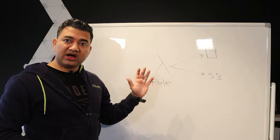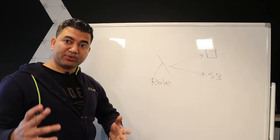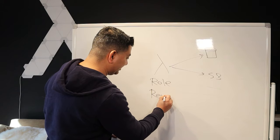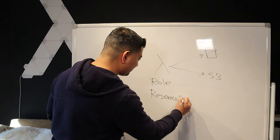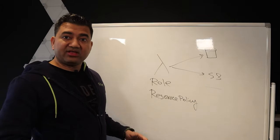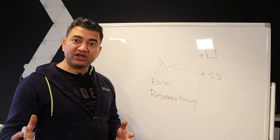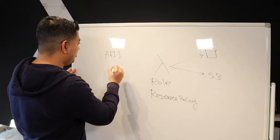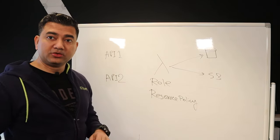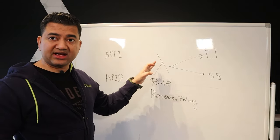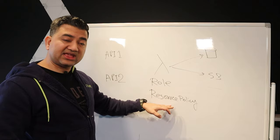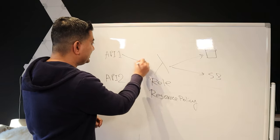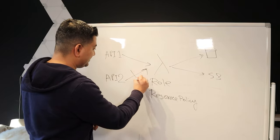The part people often don't know is the Lambda resource policy, which controls who can call your Lambda. For example, if you have API 1 and API 2, but you only want API 1 to invoke this Lambda and not API 2, you can set that in the resource policy — allow invocation from API 1, but reject invocation from API 2.